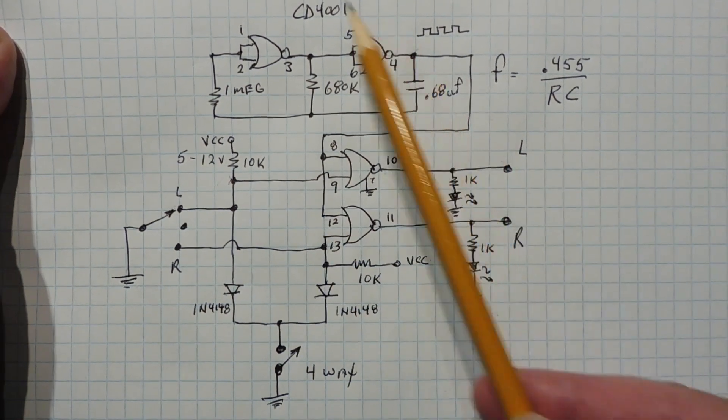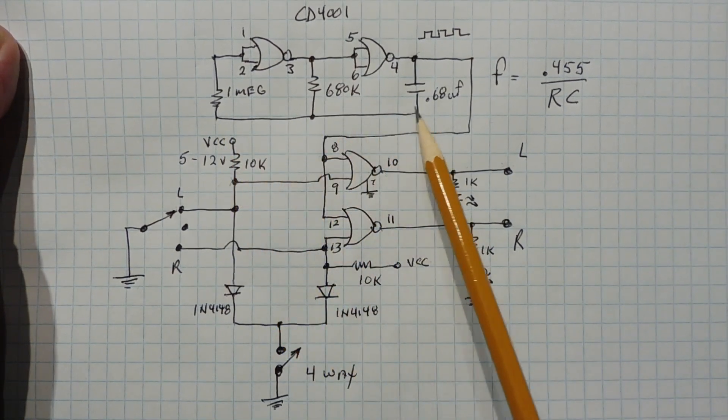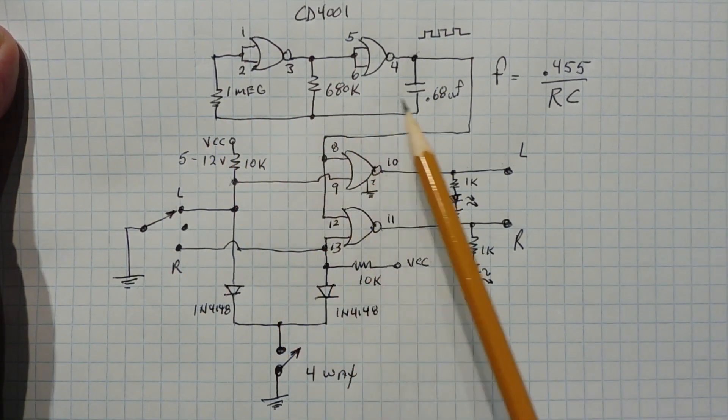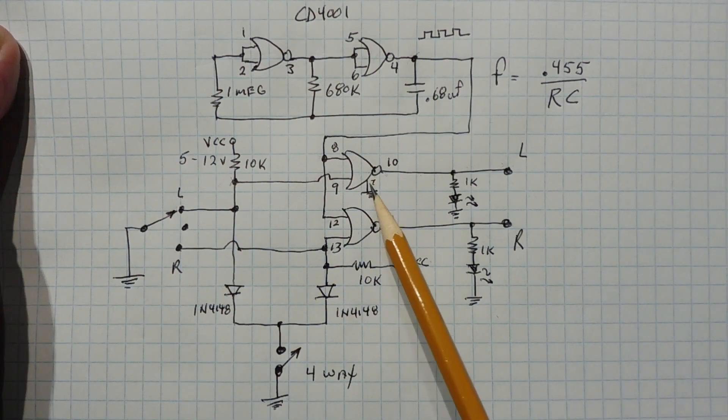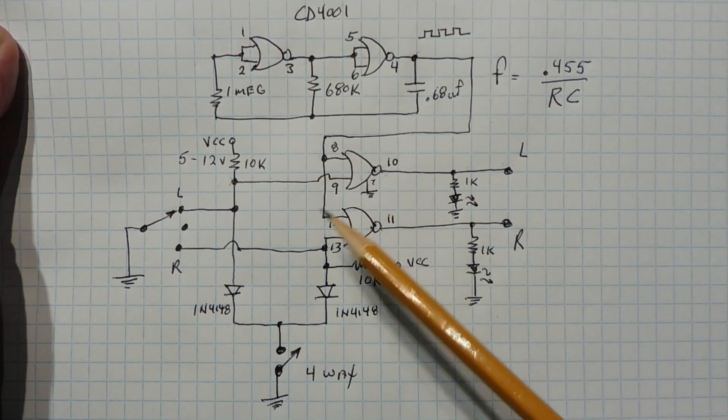Now that Hertz signal is fed into the input of these NOR gates. Now one thing about this RC oscillator: a lot of students make a mistake and they think this bus here is ground, but it's just a tie point for these three components. Ground is actually pin seven on the chip.